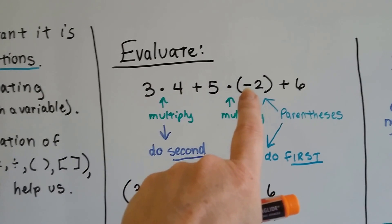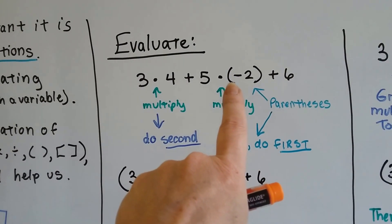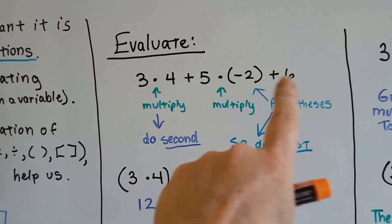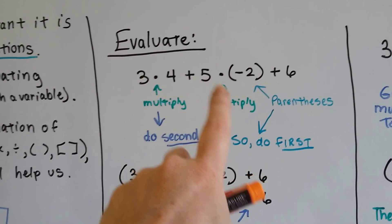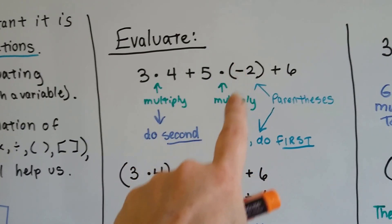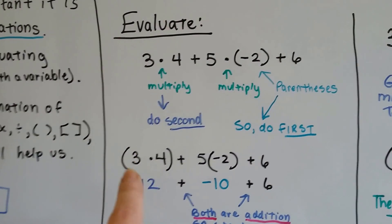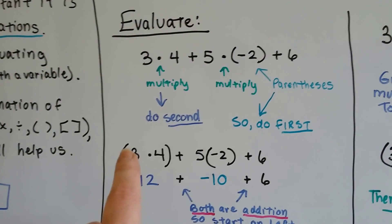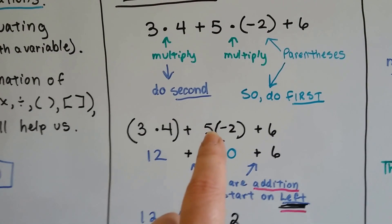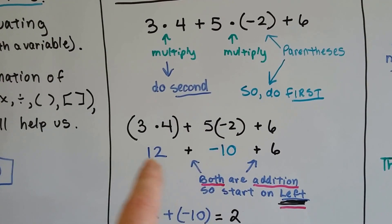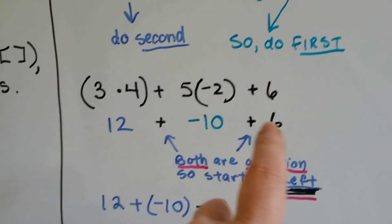Why do 5 times negative 2 first instead of negative 2 plus 6? Because you multiply first. You might think it's parentheses so you can work with that addition — but that's addition and you have to multiply first. Because of the parentheses, we do 5 times negative 2 first, then we do the other multiplication. Grouping the similar operations: we've got this multiplication and this multiplication.